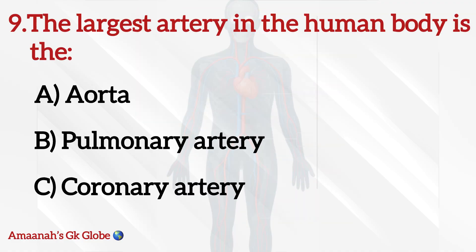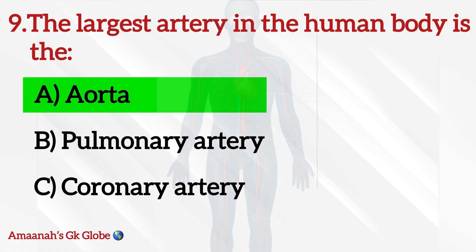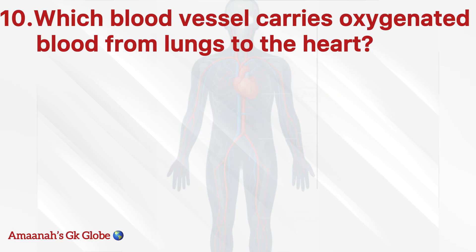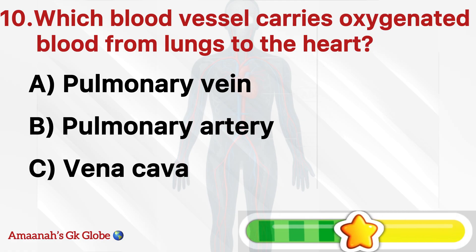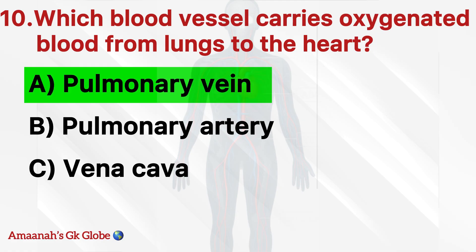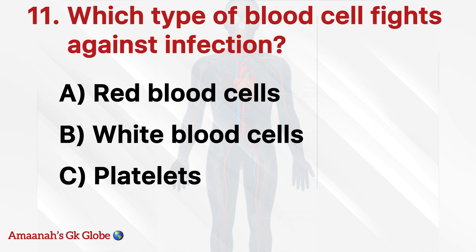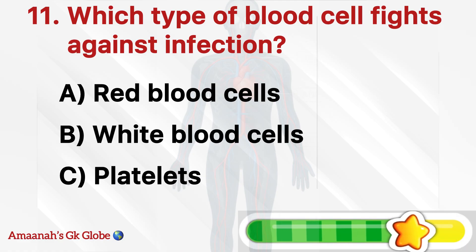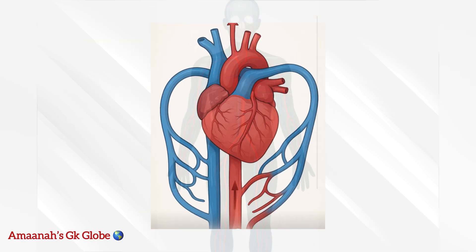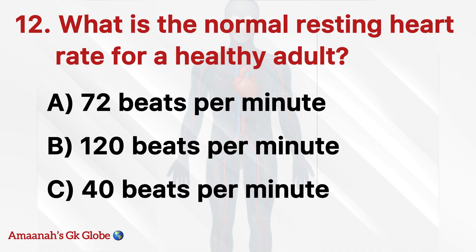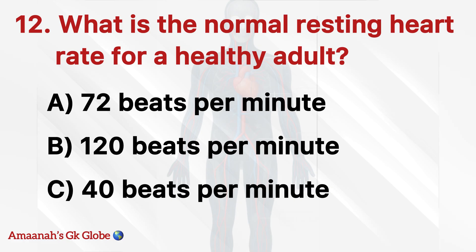The aorta. Which blood vessel carries oxygenated blood from the lungs to the heart? Pulmonary vein. Which type of blood cell fights against infection? White blood cells. What is the normal resting heart rate for a healthy adult? 72 beats per minute.